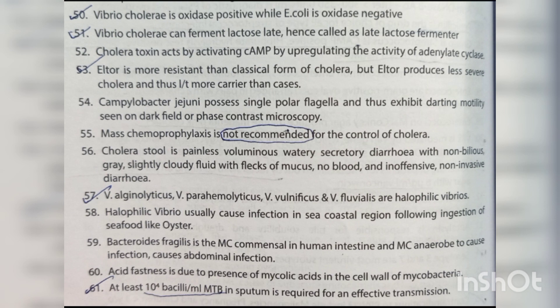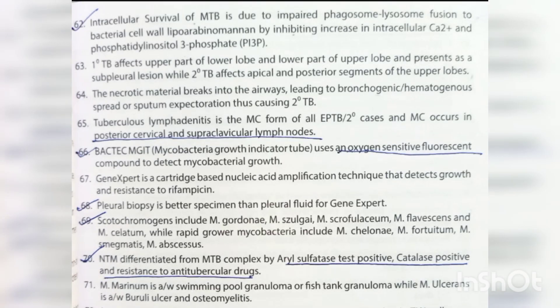Acid fastness is due to the presence of mycolic acids in the cell wall of mycobacteria. At least 10⁴ bacilli per mL of MTB in sputum is required for effective transmission. Intracellular survival of MTB is due to impaired phagosome-lysosome fusion via bacterial cell wall lipoarabinomannan, by inhibiting increases in intracellular calcium and phosphatidylinositol 3-phosphate. Primary TB affects the upper part of the lower lobe and lower part of the upper lobe, presenting as a subpleural lesion.